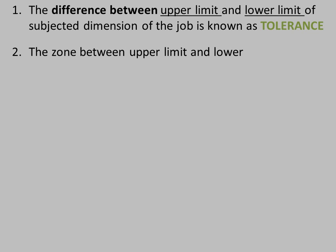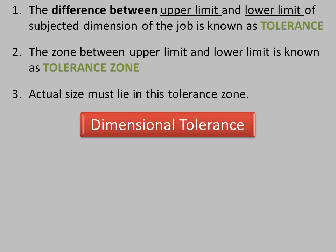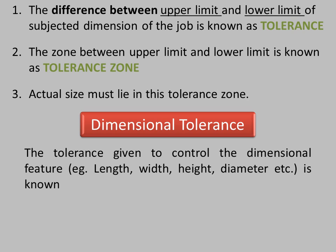In the previous video we studied that the difference between the upper limit and lower limit of the subjected dimension of a jaw is known as Tolerance. The zone between upper limit and lower limit is known as the Tolerance Zone. The actual size must lie within this Tolerance Zone. Now we have to study Dimensional Tolerance. The tolerance given to control the dimensional feature is known as Dimensional Tolerance.